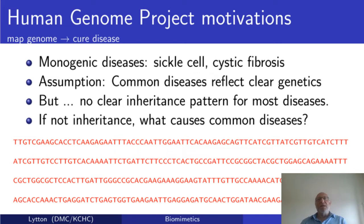We'll be talking today about schizophrenia. Like many of these diseases, schizophrenia has no clear inheritance pattern. It has a combination of genetic underpinnings and aspects of the disease that have clearly responded to nurture and not nature in terms of the person's experience. What causes these common diseases is not purely inheritance — it's complex, multifactorial, and requires multifactorial approaches.